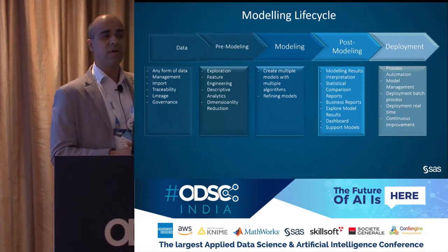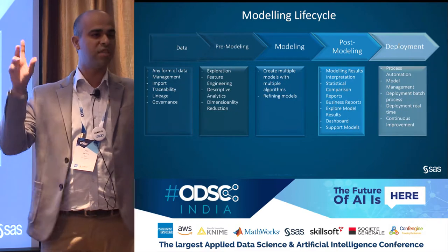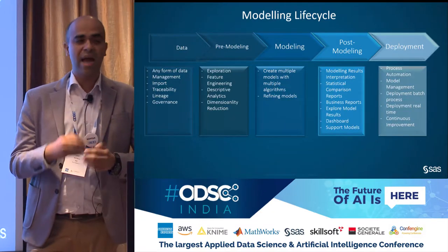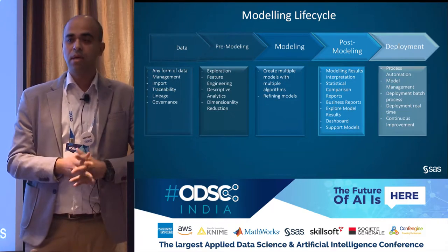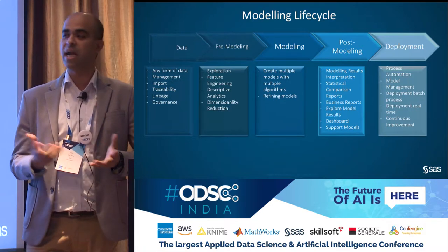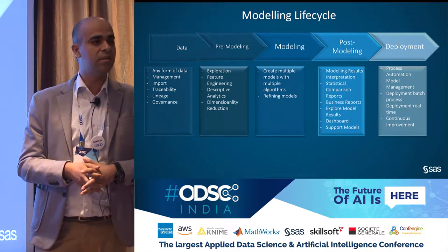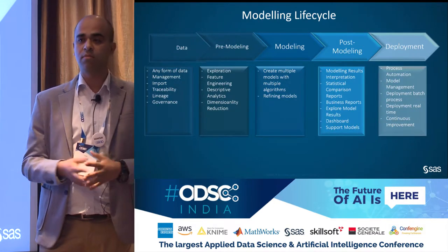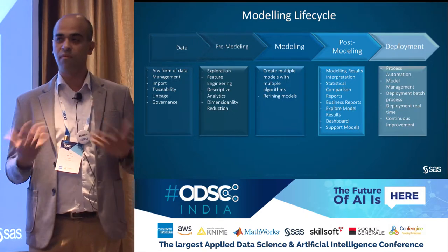Third step: modeling. This is where people get interested — where the real magic works. You could build n number of models, you could even iterate many models with just one algorithm. The ultimate goal is to build a model where you can define your champion models and your challenger models — be it identifying spam versus non-spam emails, classification models, prediction models, or forecasting models. This is where the modeling really happens with the different algorithms now available.